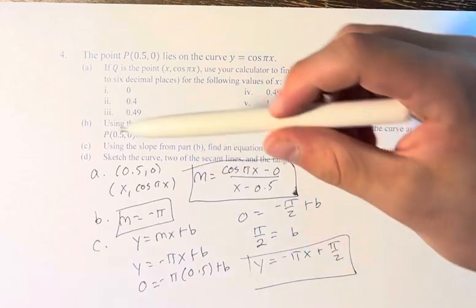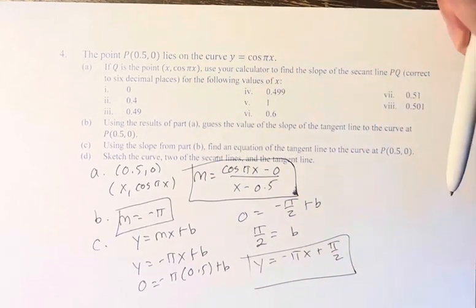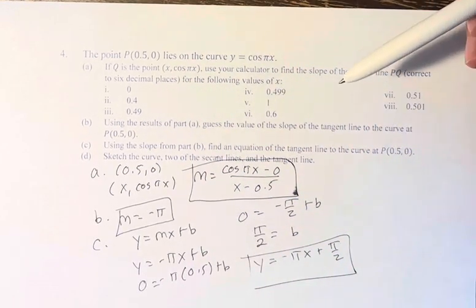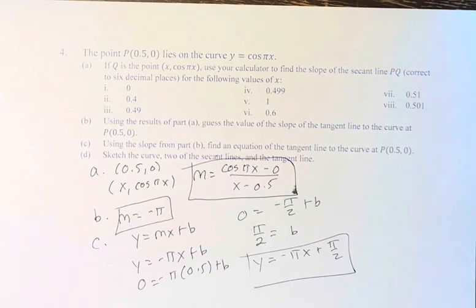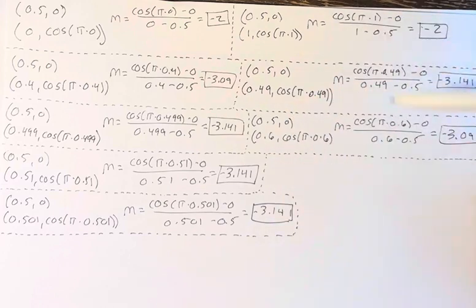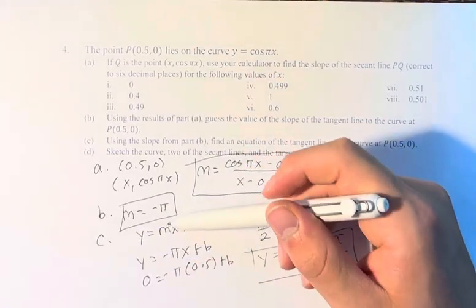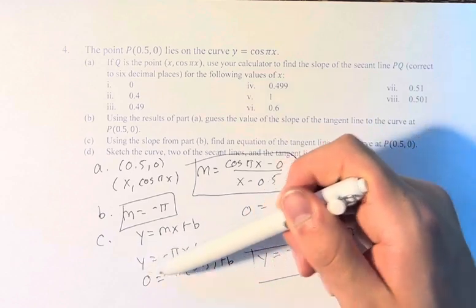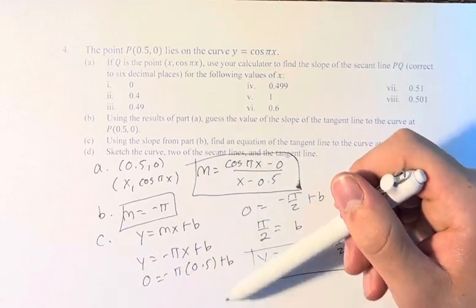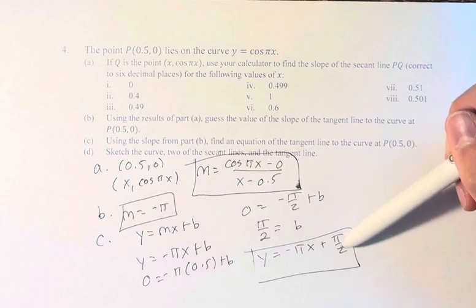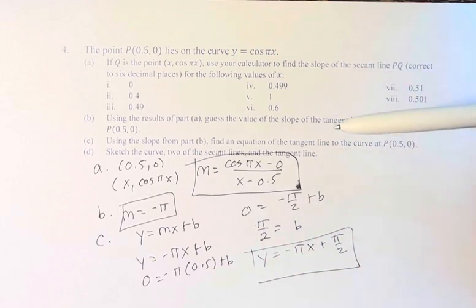And so we're asked to graph the curve, two of the secant lines, and the tangent line. And so I have done that here. You have to do the extra step of from these slopes, plugging the slope into y equals mx plus b, plugging in whatever point you have, 0 or 0.5 is going to be the easiest for all of these, and finding the y-intercept, and then plugging that back into its equation. Or you can just use point-slope form, which doesn't require any calculations, which is what I did.